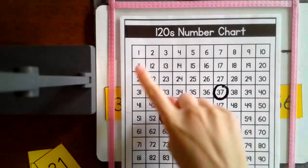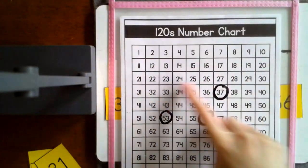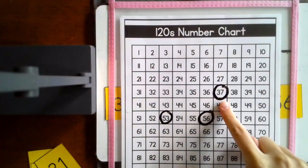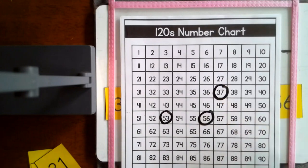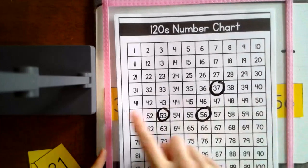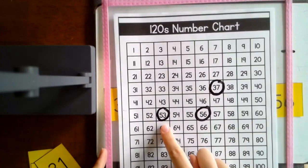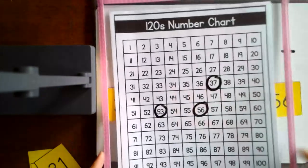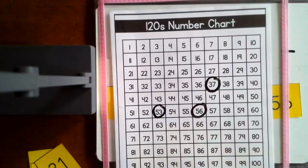I'm going to read across until I get to the first number and see if that is the first one. 37 looks like it's the least. And that's what we put down. Going to keep going. 53 would be the next. That's what we put. And then finally, 56 is the greatest.